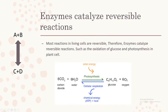Enzymes catalyze reversible reactions — this is one of the biggest characteristics of enzymes. Most reactions in living cells are reversible, therefore enzymes catalyze reversible reactions. An example is the oxidation of glucose and photosynthesis in plants. For example, photosynthesis when reversed is cellular respiration. The basic form is: A + B ⇌ C + D, where C and D are the products.